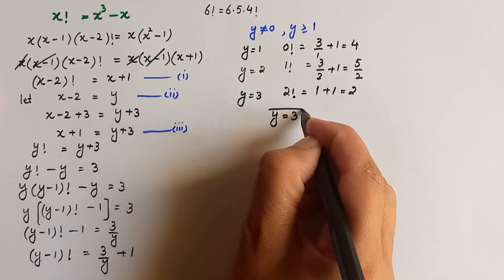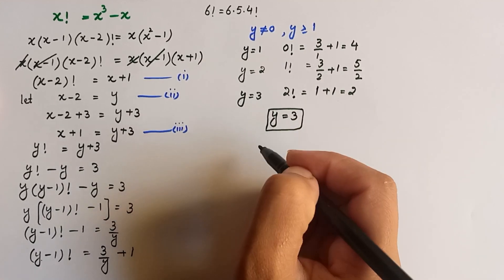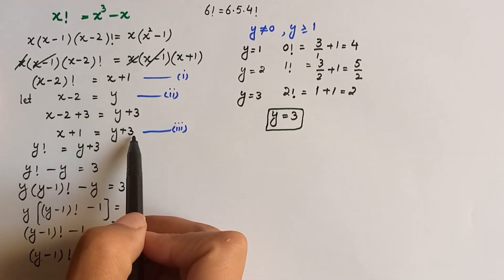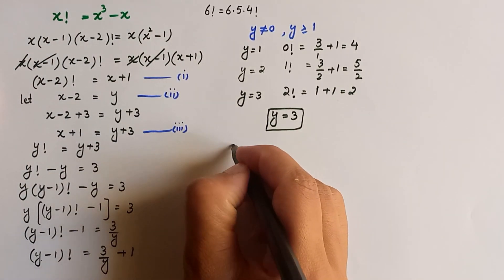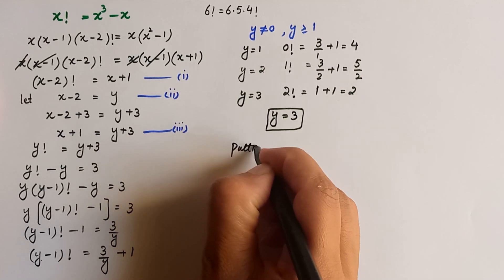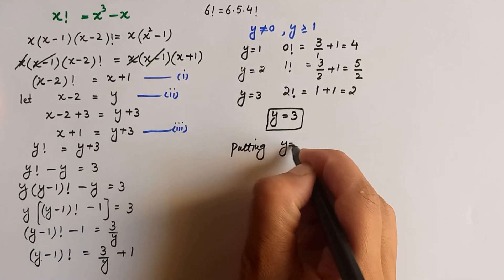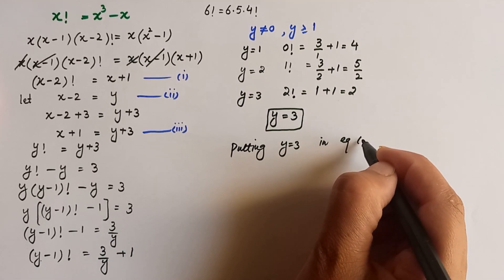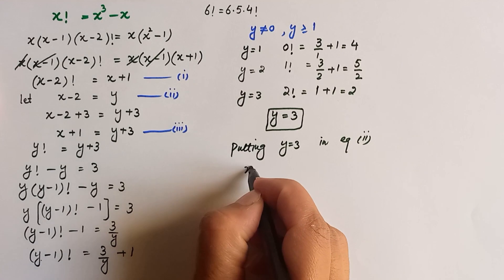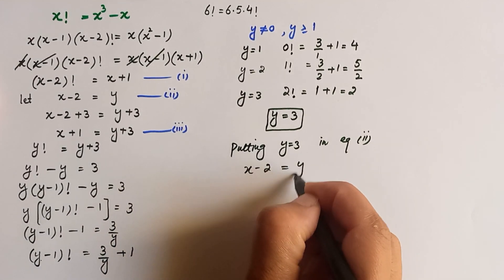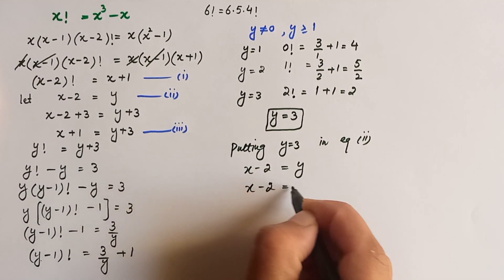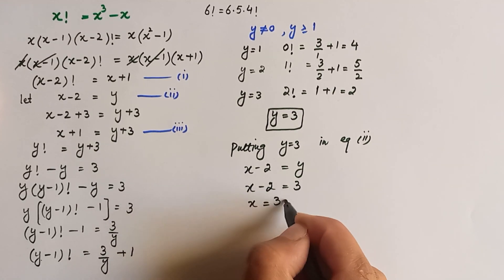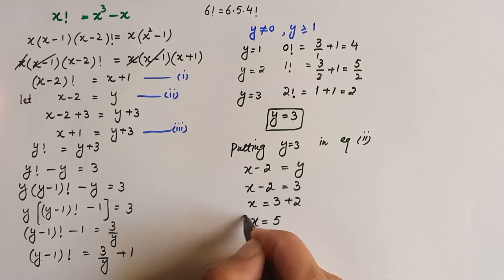The value of y is 3. Substituting into equation 2, which is x minus 2 equals y: x minus 2 equals 3, so taking 2 to the right hand side gives x equals 5 as the required answer.